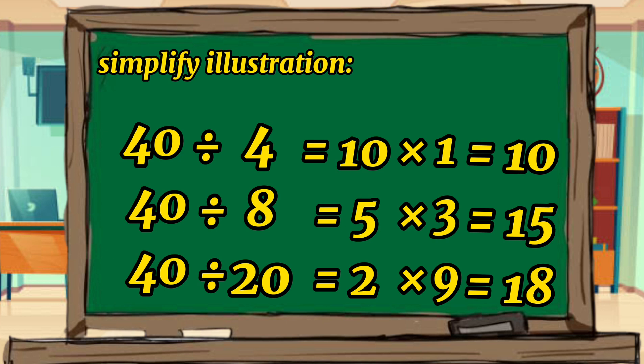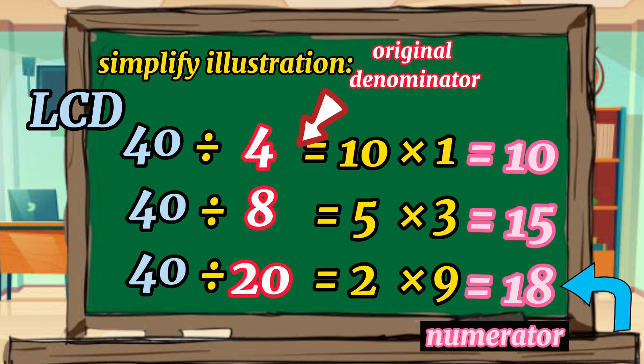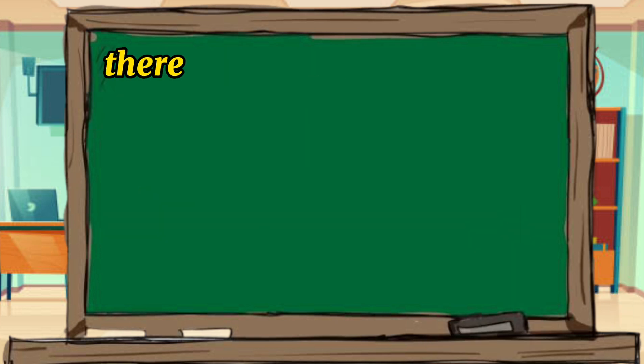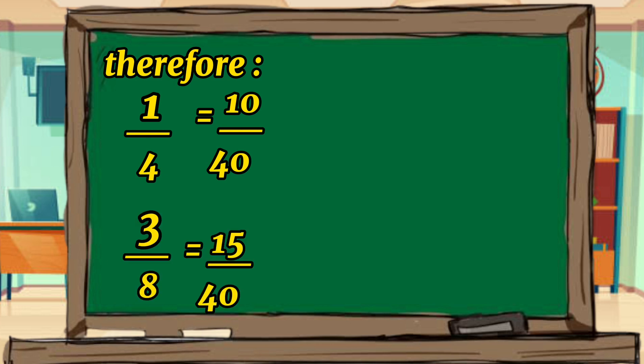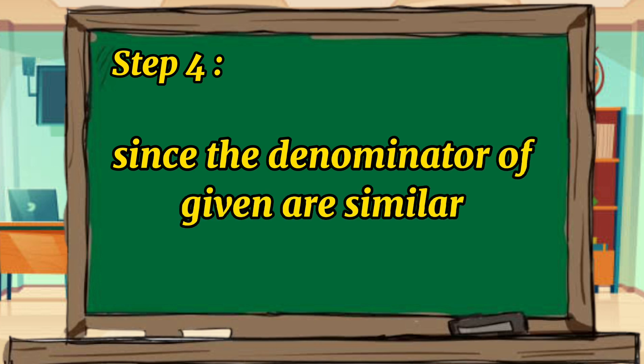Let's take a look at the simplified illustration. The least common denominator is 40, and the original denominators are 4, 8, and 20. Our new numerators are 10, 15, and 18. Therefore, 1/4 becomes 10 over 40, 3 over 8 becomes 15 over 40, and 9 over 20 becomes 18 over 40. Since the denominators of the given numbers are now similar, we can now proceed to the addition process.